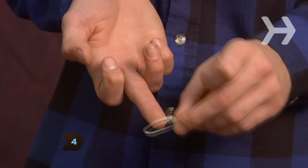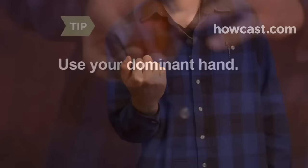Step 4: Place the loop on your middle finger between your first and second knuckles. Use your dominant hand to yo-yo, which will give you more control.